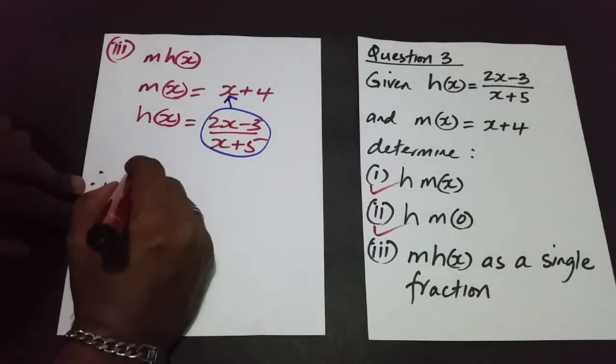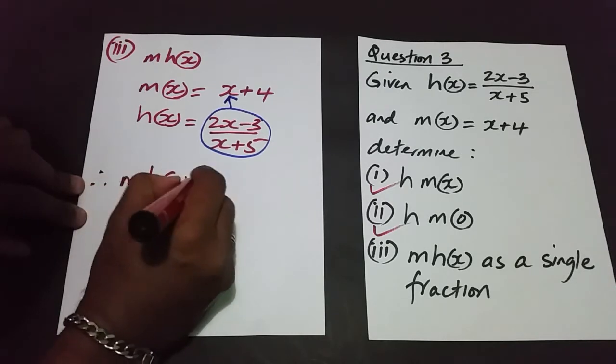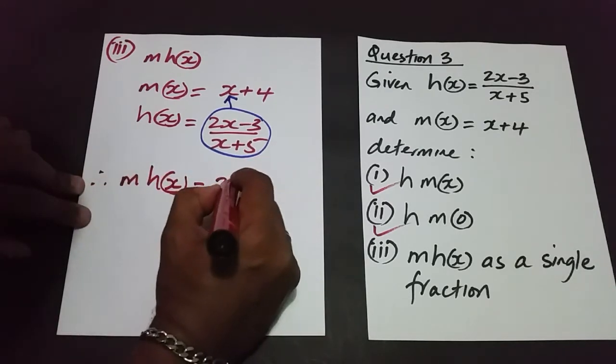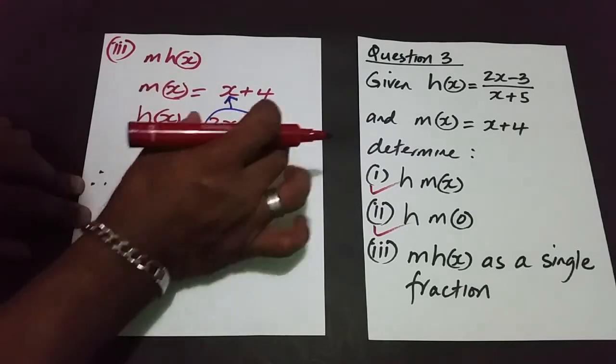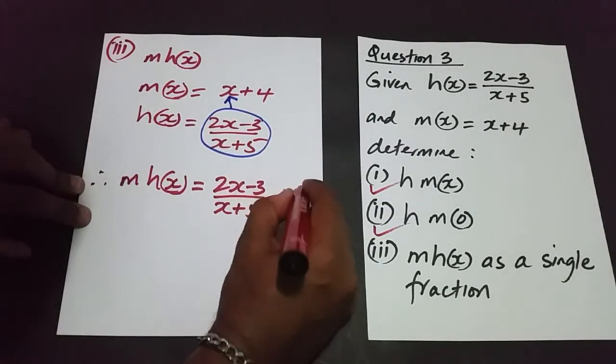So therefore m of h of x is going to be equal to 2x minus 3 over x plus 5, replace x with this function, and then we add 4.